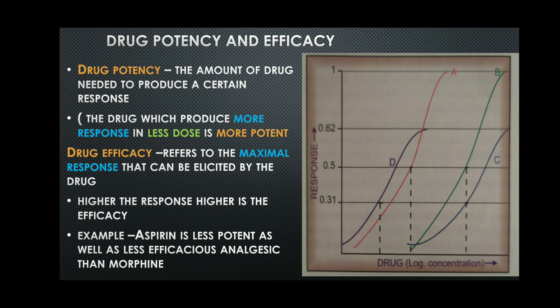Looking at the figure with four drugs A, B, C, D: comparing A and B, both produce the same response, but A requires less dosage, so A is more potent than B. Similarly, D is more potent than C — both produce the same response but less dosage of D is required.